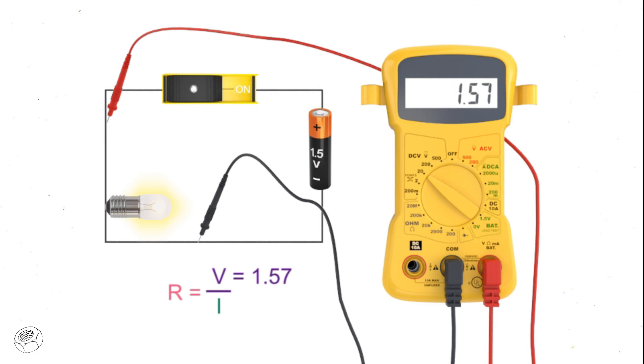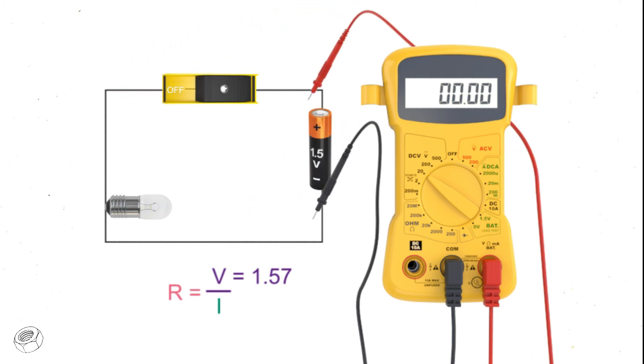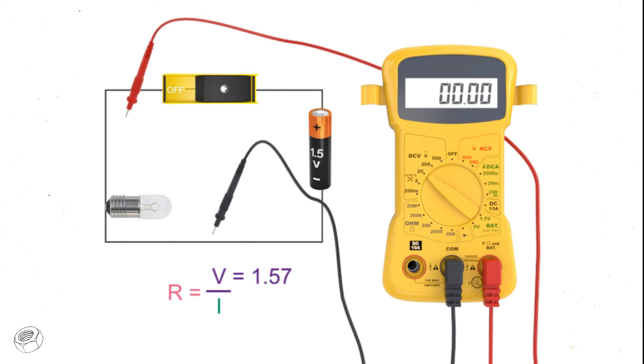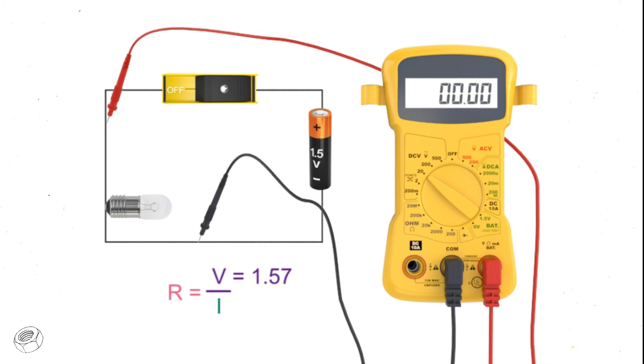Now if we put the switch in the off or closed position, we will still see the voltage across the battery. However, the voltage across the bulb will be 0. This is expected, as the light bulb, which is the load in this circuit, only has a voltage across it if a current is present.